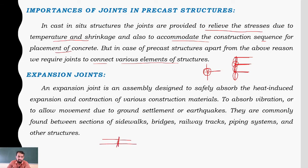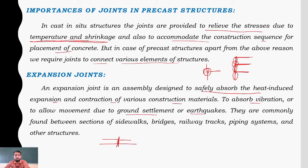This opening is provided for expansion only. Expansion joints are provided because of temperature changes and shrinkage. An expansion joint is an assembly designed to safely absorb heat-induced expansion and contraction of various construction materials, absorb vibration, or allow movement during ground settlement. They are commonly found between sections of sidewalks, bridges, railway tracks, piping systems, and other structures.